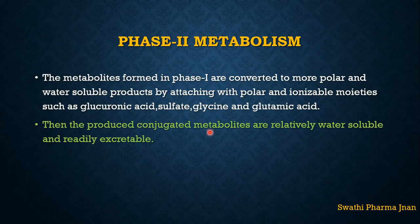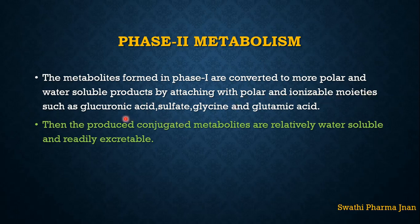What is Phase 2 metabolism? The metabolites which are formed in Phase 1 metabolism are converted to more polar and water-soluble products by attaching with polar and ionizable moieties such as glucuronic acid, sulfate ions, glycine, and glutamic acid. With all these moieties, it will conjugate and then be eliminated from the body.